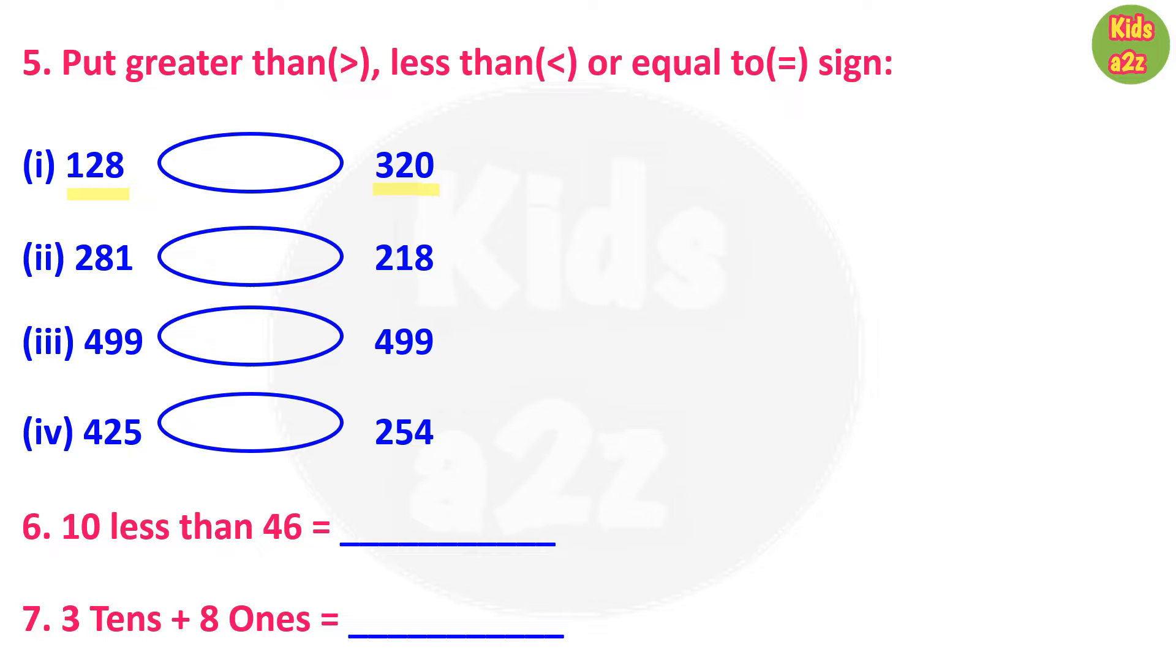Then between 281 and 218, 281 is greater than 218. Third one is 499 equals to 499. And number 4: 425 greater than 254. Question number 6: 10 less than 46? Answer is 36.